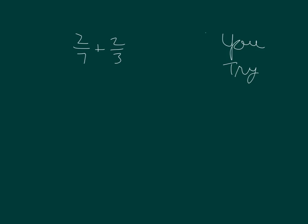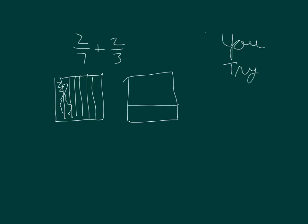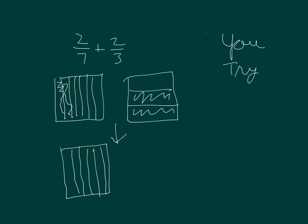Here's one last one for you to try. Two sevenths plus two thirds. Draw two sevenths first, and then draw two thirds. And then we make equivalent. We're going to twenty-firsts. That is equal to...